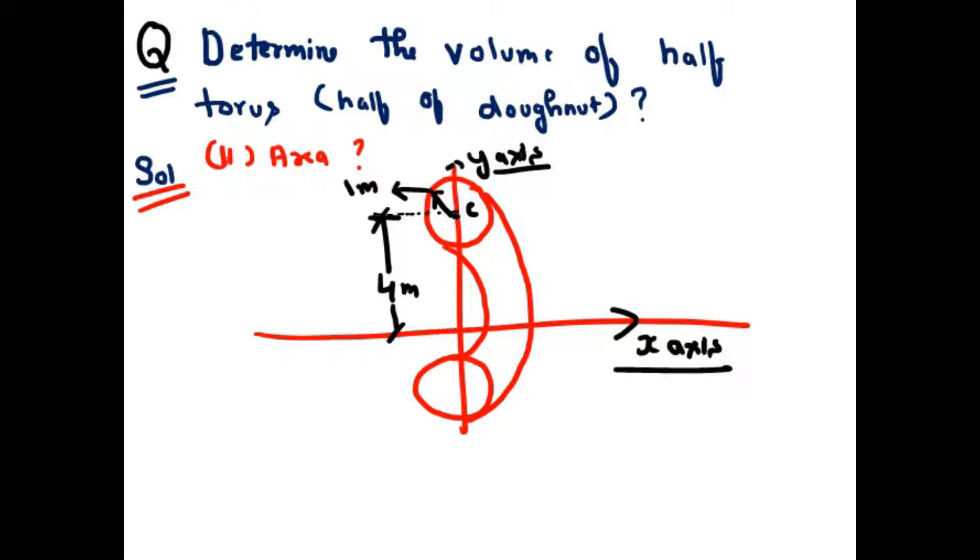The question is given: determine the volume and surface area of a half torus. The half part of the tube.